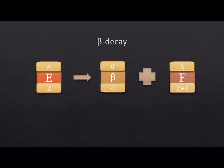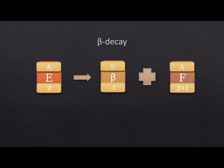For beta decay, if an element gives out a beta particle, its atomic mass number remains unchanged while its atomic number increases by 1, and the element becomes a completely new element altogether.